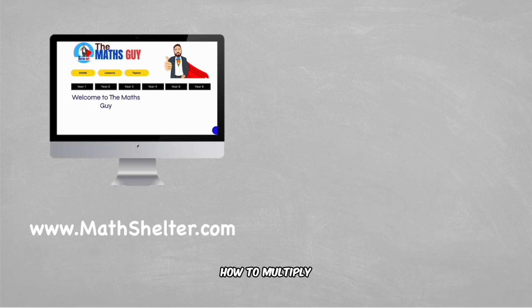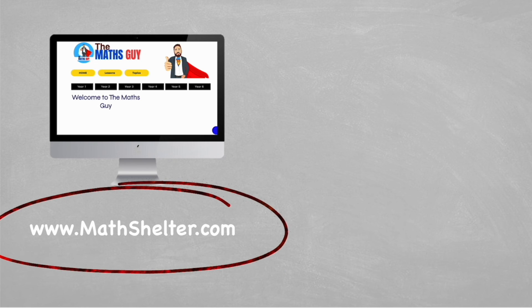And there you have it. That is how to multiply a 4 digit by a 2 digit number. If you found this helpful, head on over to themathshelter.com where there's loads more videos that are going to help you understand everything you need to know in maths. But for now guys, thanks very much. See you in another video. Peace out.